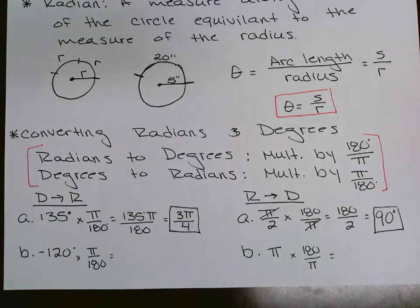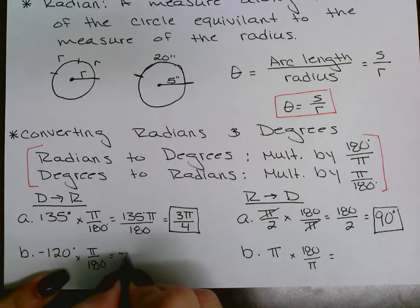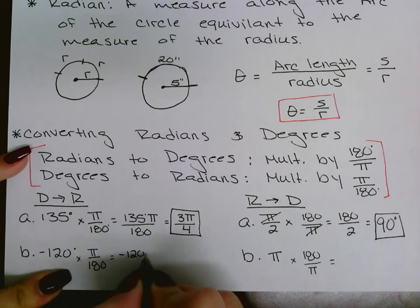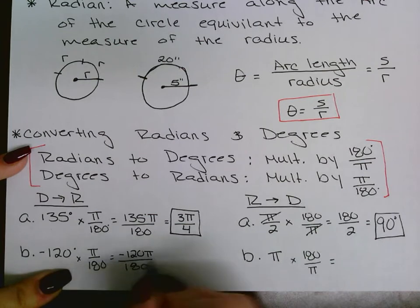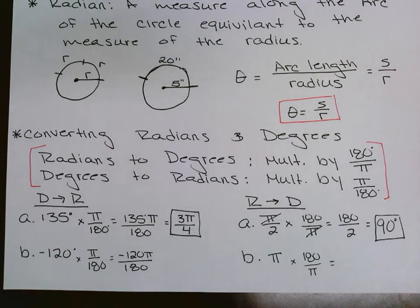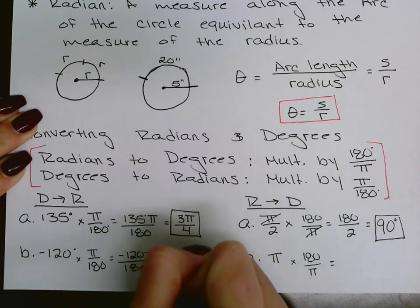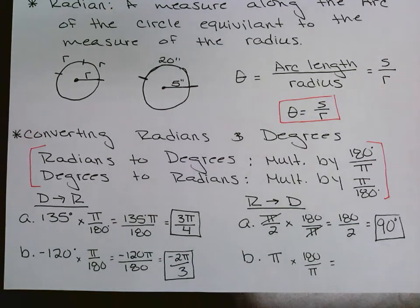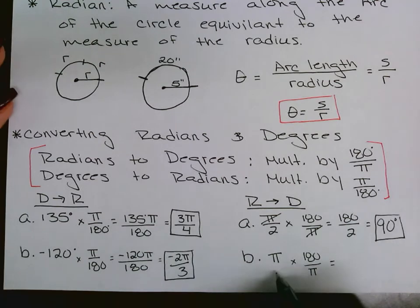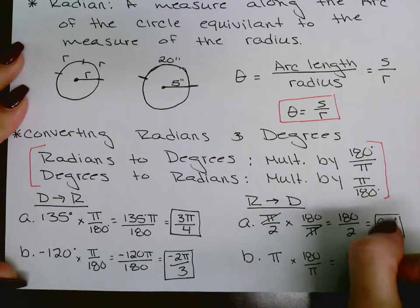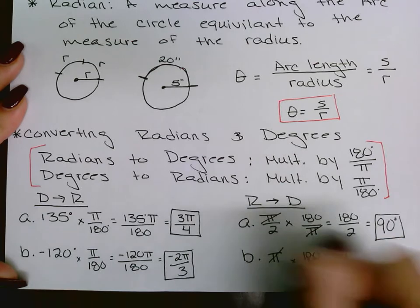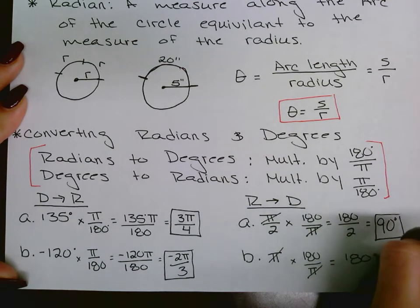The next example: negative 120 degrees times pi over 180 gives negative 120 pi over 180. Ignoring pi and reducing gives negative 2 pi over 3. Then radians to degrees: pi times 180 over pi — the pi's cancel and you're left with 180 degrees.